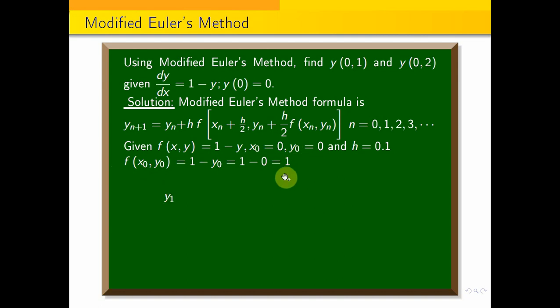Now, y1. y1 equals 0.1. In the formula, we get y0 plus h value. Again substitute in x0, y0 plus h by 2, y0 plus h by 2 times f of x0, y0. Now, y0 is equal to 0.1 times f of x0, y0 equals 0.1 and 0.1 by 2, y0 equals 0.1 by 2. So f of x0, y0, which equals 1.